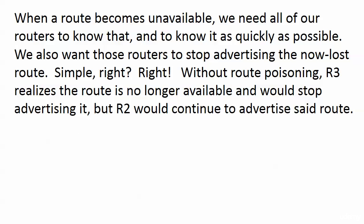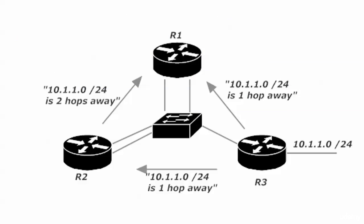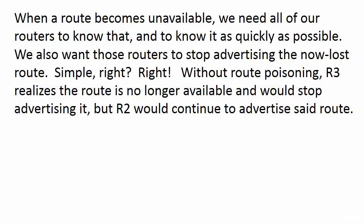When 10.1.1.0/24 becomes unavailable, we want all routers to know about it as quickly as possible — we want convergence. Router 3 needs to tell everyone it doesn't know where that network is anymore. What many people thought is that router 3 would just stop advertising it. But there's a problem: if router 3 simply stops advertising it, that doesn't remove the entry from router 2's routing table.